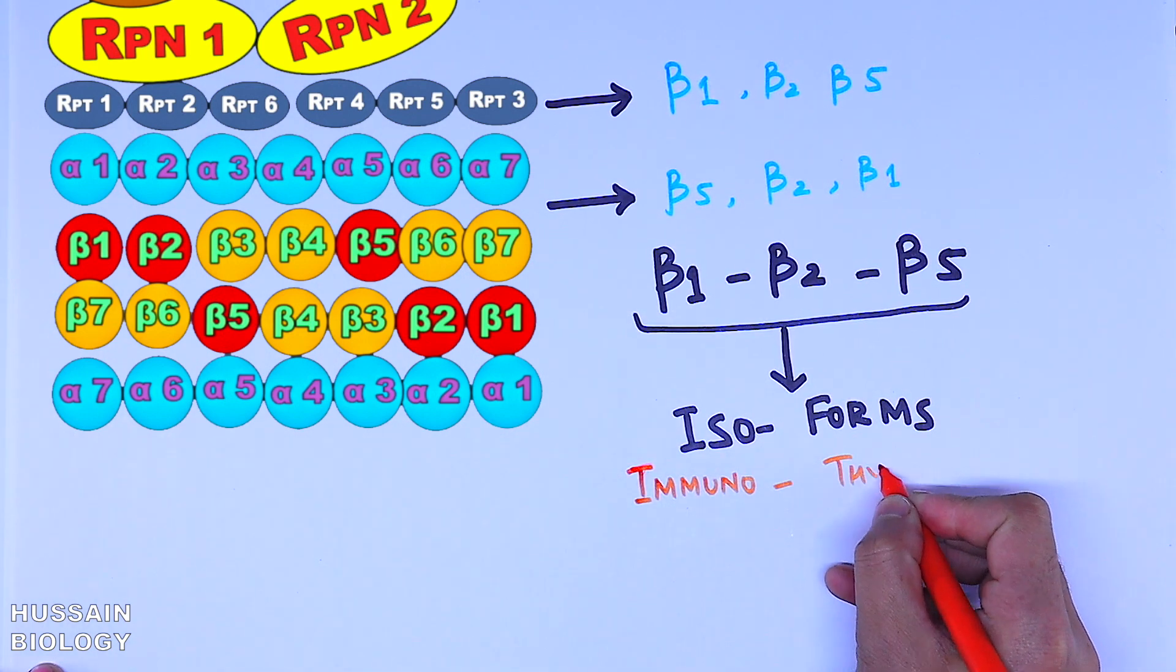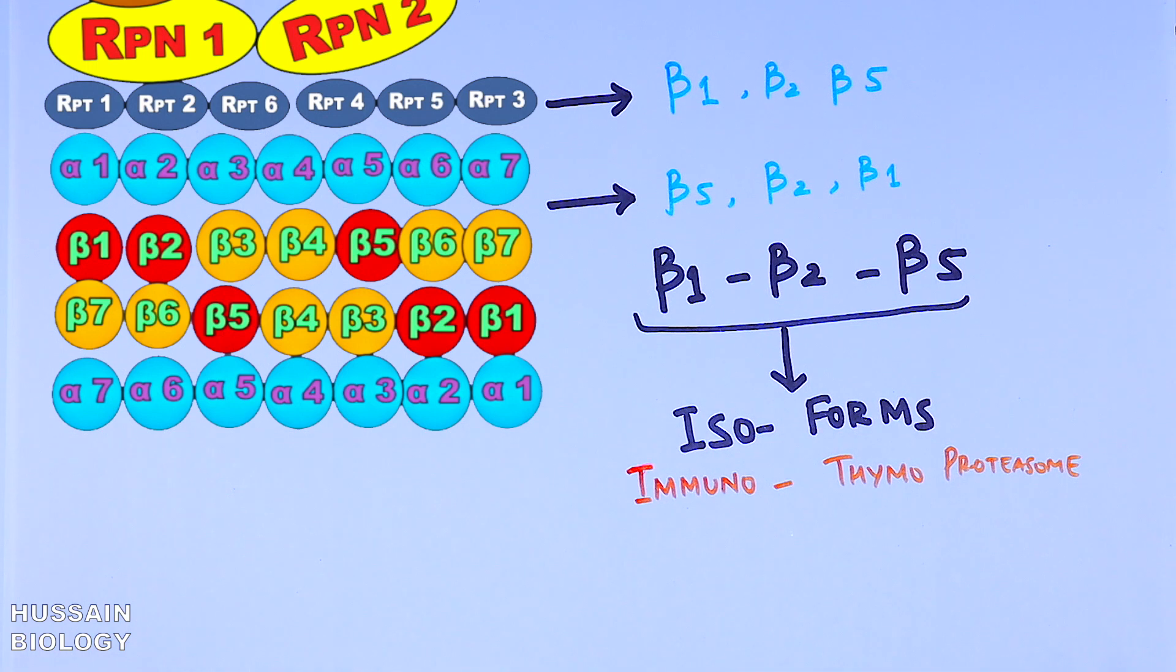Now let's see in detail how the formation occurs and what are these isoforms substituted in these two classes of proteosomes.